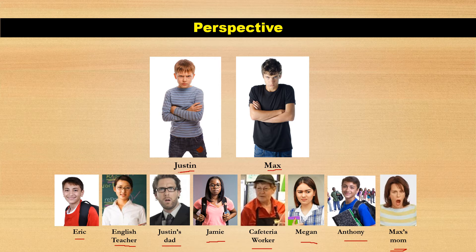The interesting thing about this is that although none of these people were lying — they were all telling the truth — they all told a very, very different story. They all had a different point of view. Another word we use for point of view is perspective. The interesting thing about perspective is it's not quite fact and it's not quite opinion — it's kind of a combination of the two. There's one fact: Justin and Max had a fight. But people believe different things about that fight, like whose fault it was and who really started it, because they have different perspectives.